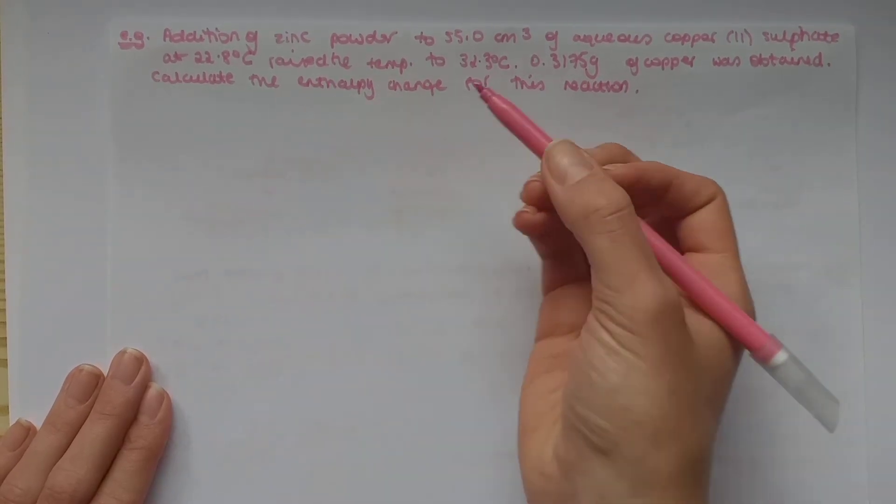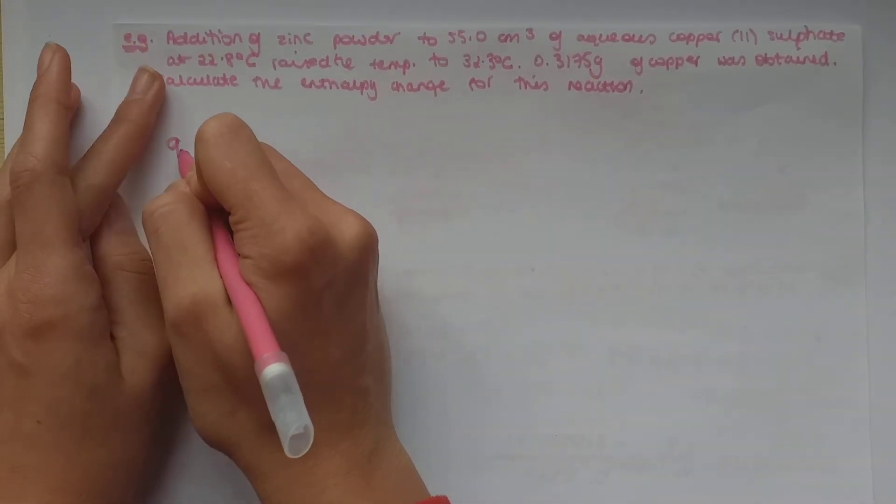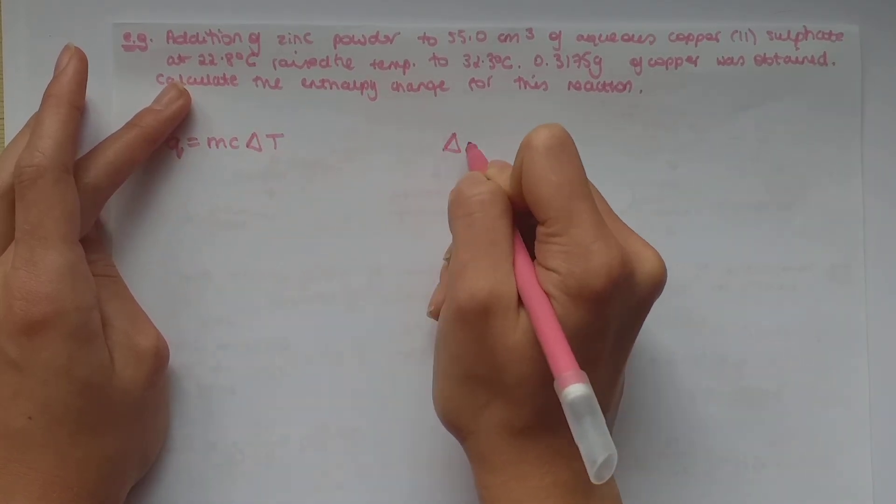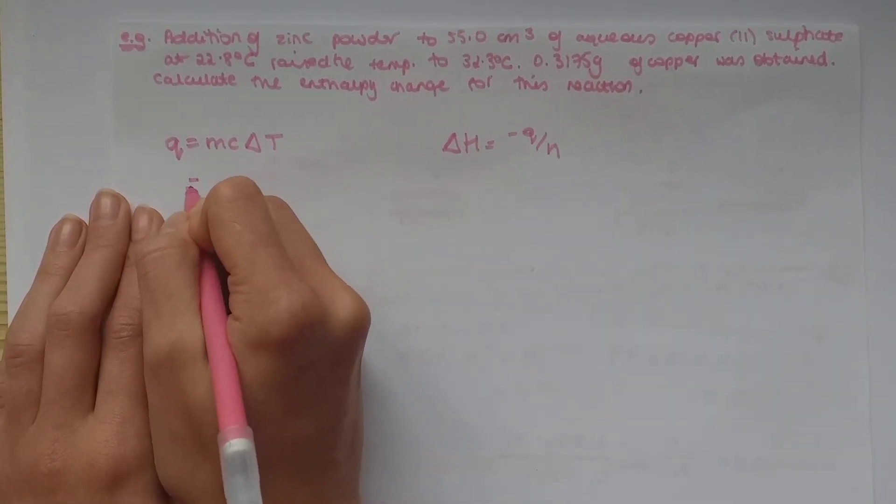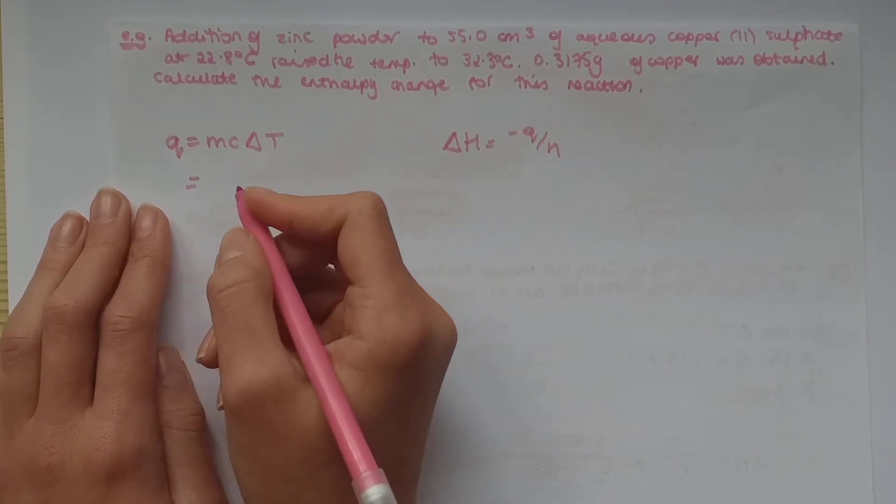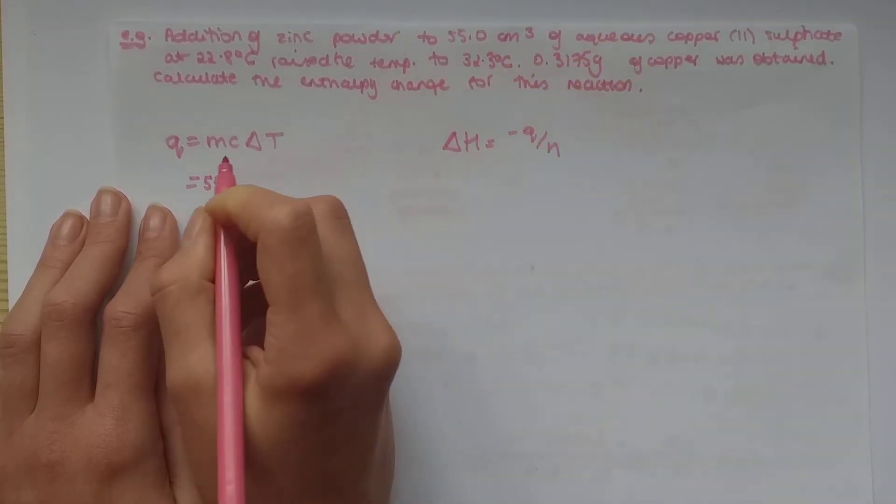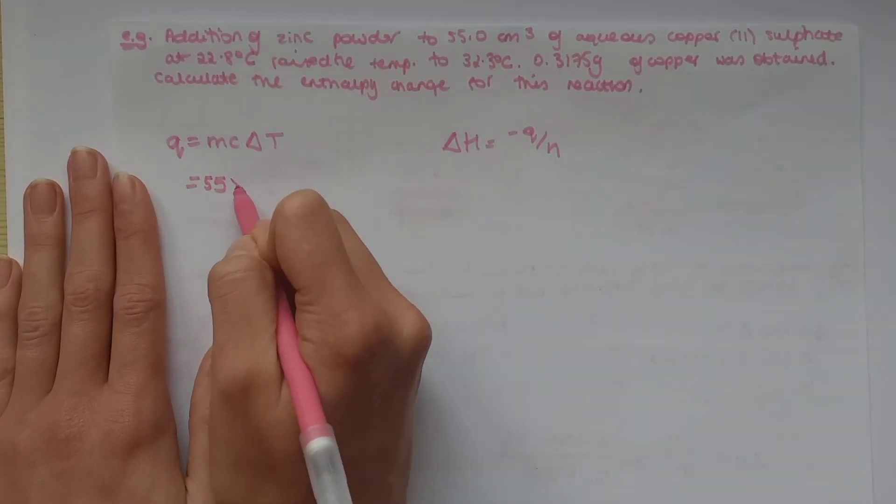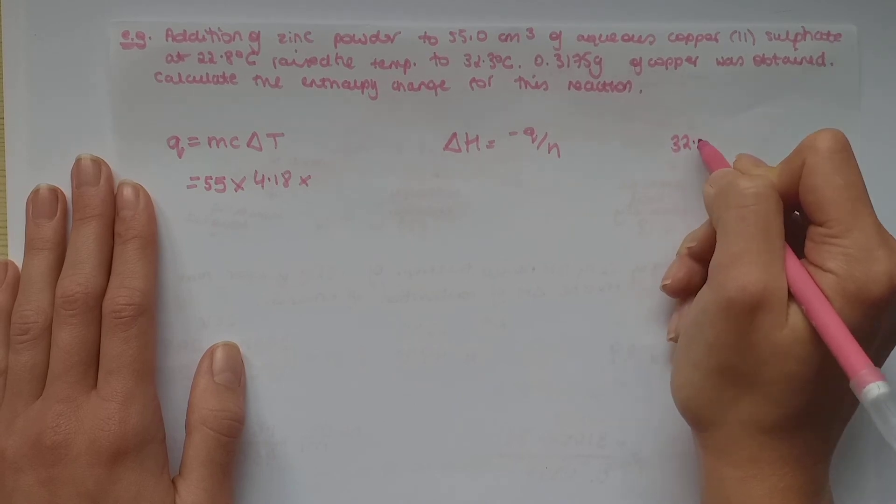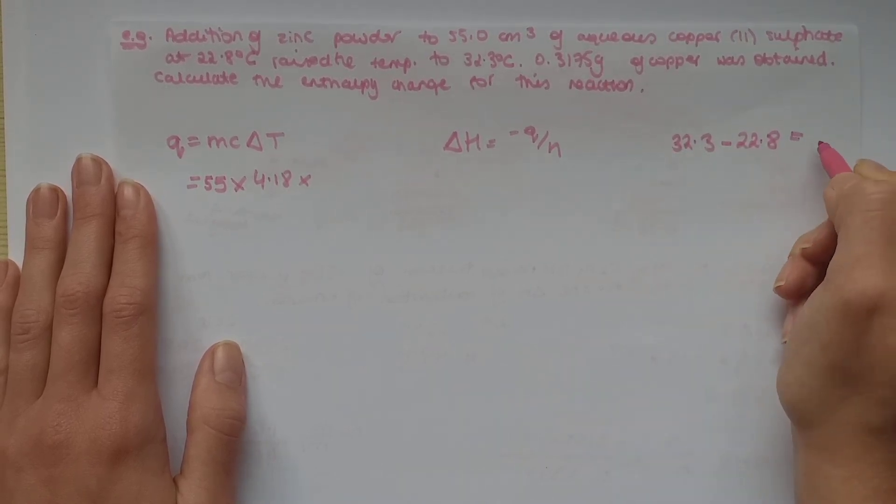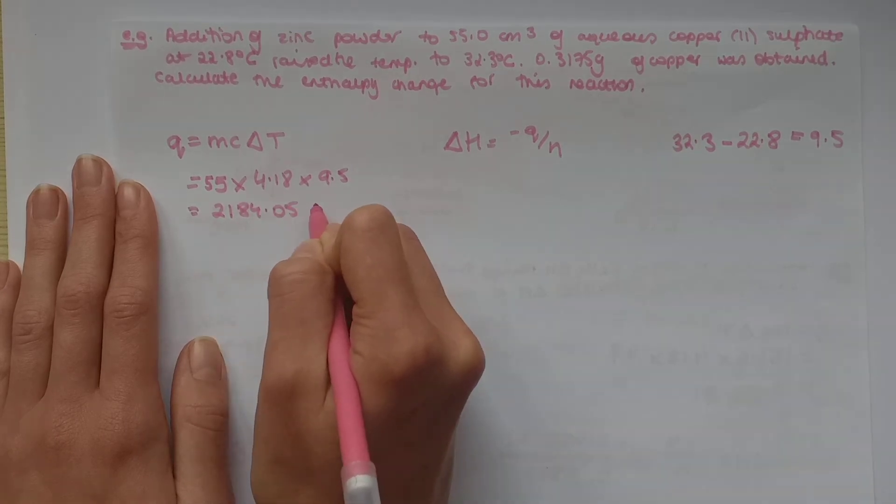Again, you have changes in temperature, you have grams, you want to find the enthalpy change. So, you straight away know you have to use this equation and then this one. Let's start with finding Q because we'll need it for this reaction. So, our mass, remember, this is the mass of the solution, not the mass of the copper that was obtained. So, the mass of the solution is 55. You can leave it as centimeters cubed. That's not a problem. C is 4.18 constant and then change in temperature 35.3 minus 22.8, which gives you 9.5. So, your Q is 2184.05 Joules.